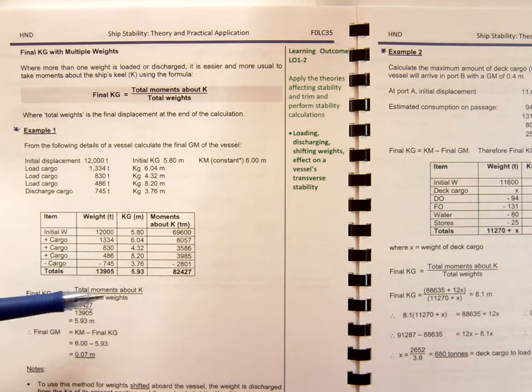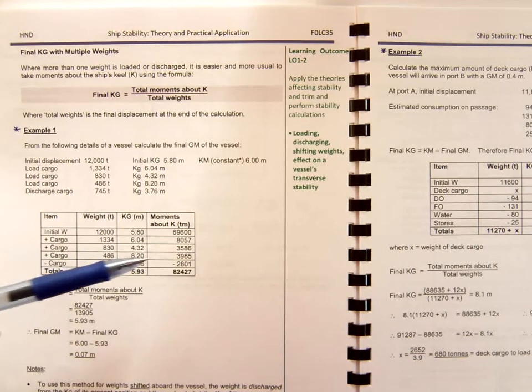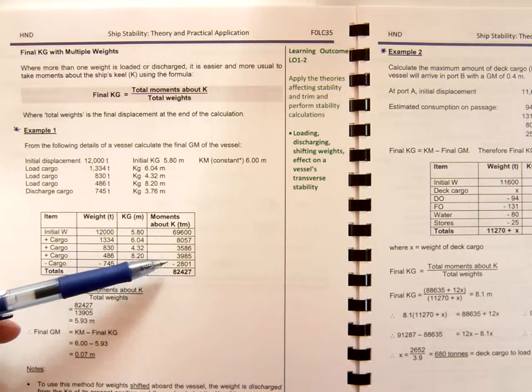Wherever you're moving it from and to, you would do two values in the table. The two weights would cancel each other out because it's still on the vessel, but you would get the correct moments on this side here.